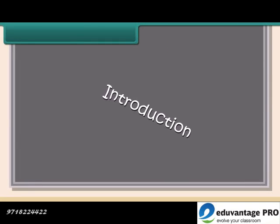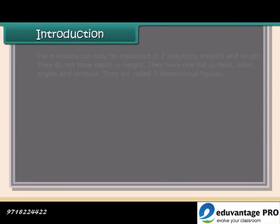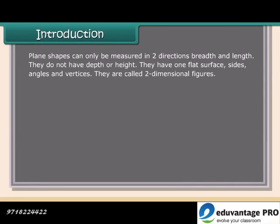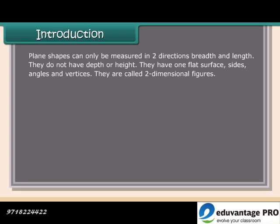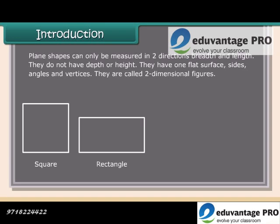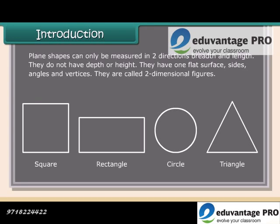Plain shapes can only be measured in two directions: breadth and length. They do not have depth or height. They have one flat surface, sides, angles, and vertices. They are called two-dimensional figures, such as square, rectangle, circle, and triangle.